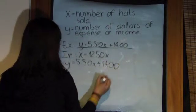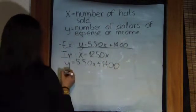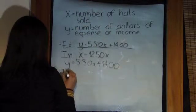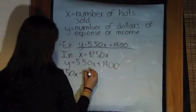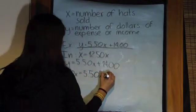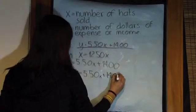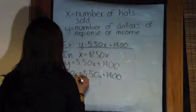Y equals 5.5X plus 1,400. We substitute 12.5X equals 5.5X plus 1,400.